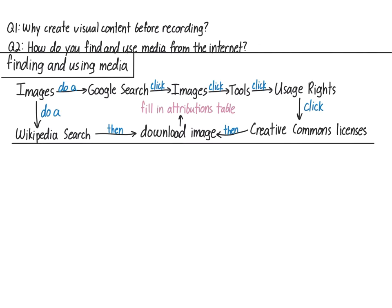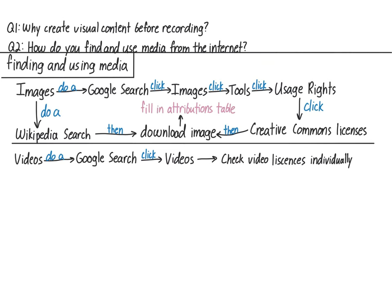But what about videos? Again, one approach is to do a Google search, then click Videos. As of this recording, I'm not aware of a license filter for videos on Google, so I have to check each video individually to see what the license is. This can take some time, so it can help if you have a trusted website or two that has produced videos in your subject area and gives their media Creative Commons licenses.